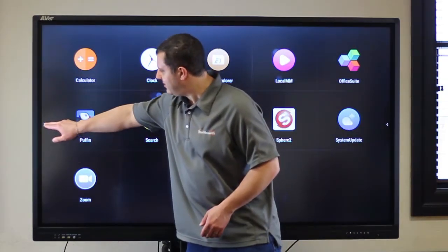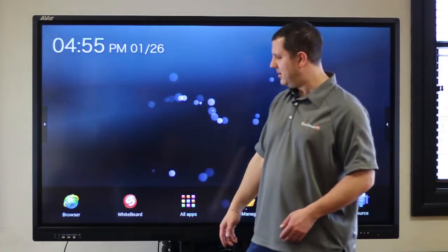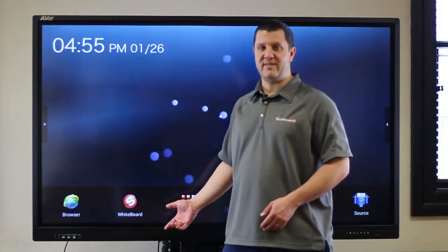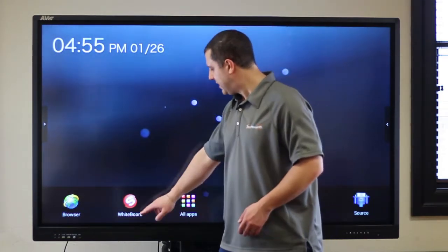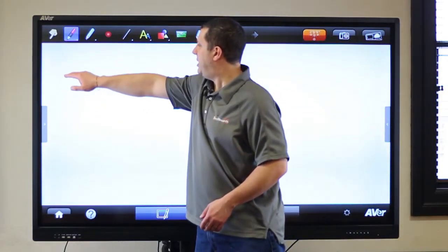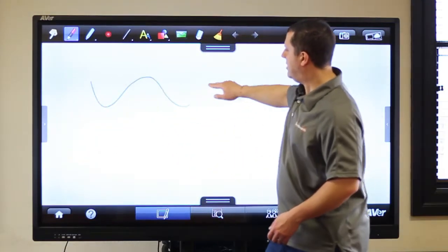You run everything else from these little menus on the side. So you hit home, go back to home. Open your web browser if you want to be online. You've got Wi-Fi and wired internet capability on here. You've got your whiteboard built in. So you can select your pen, select your color and line thickness, and you can draw on the screen.